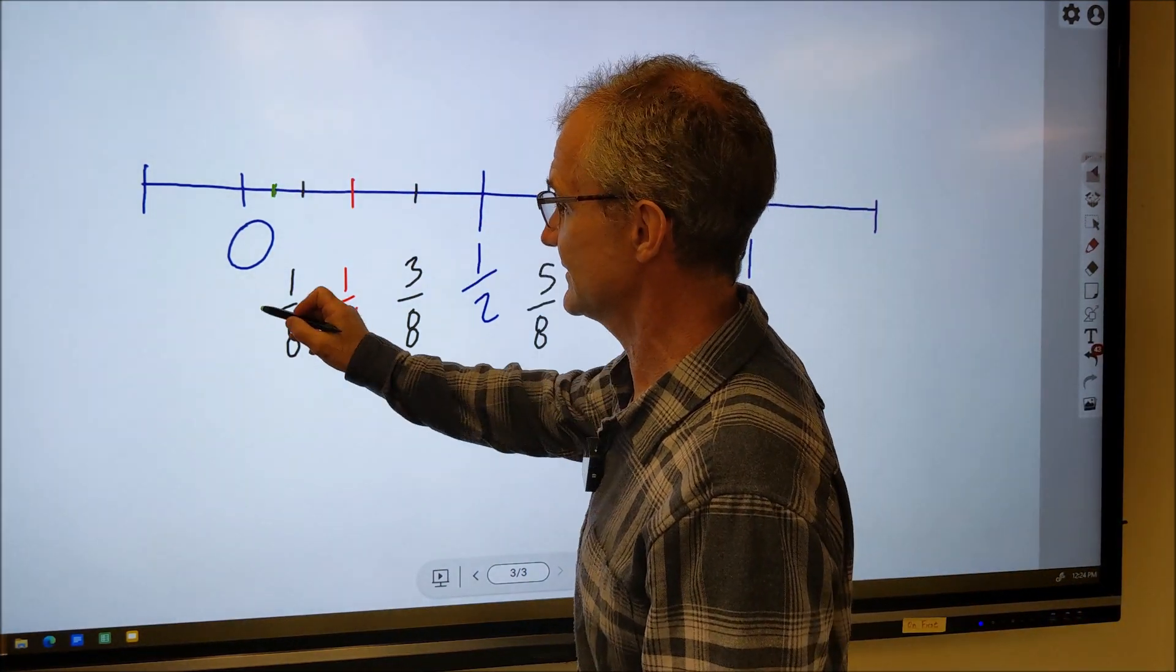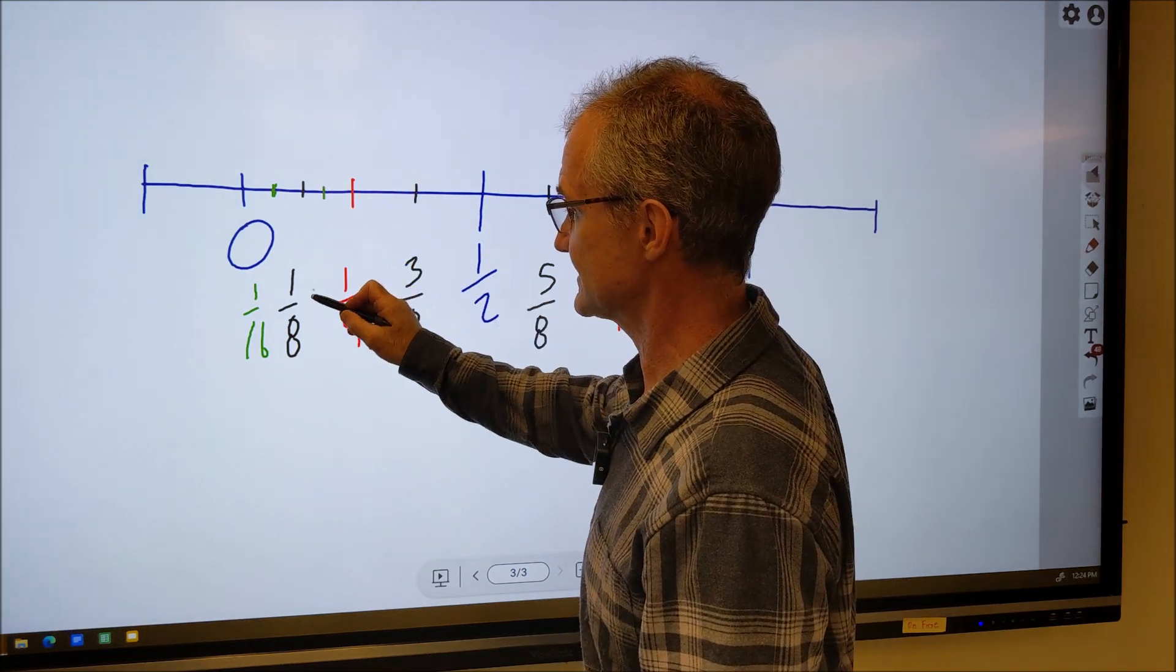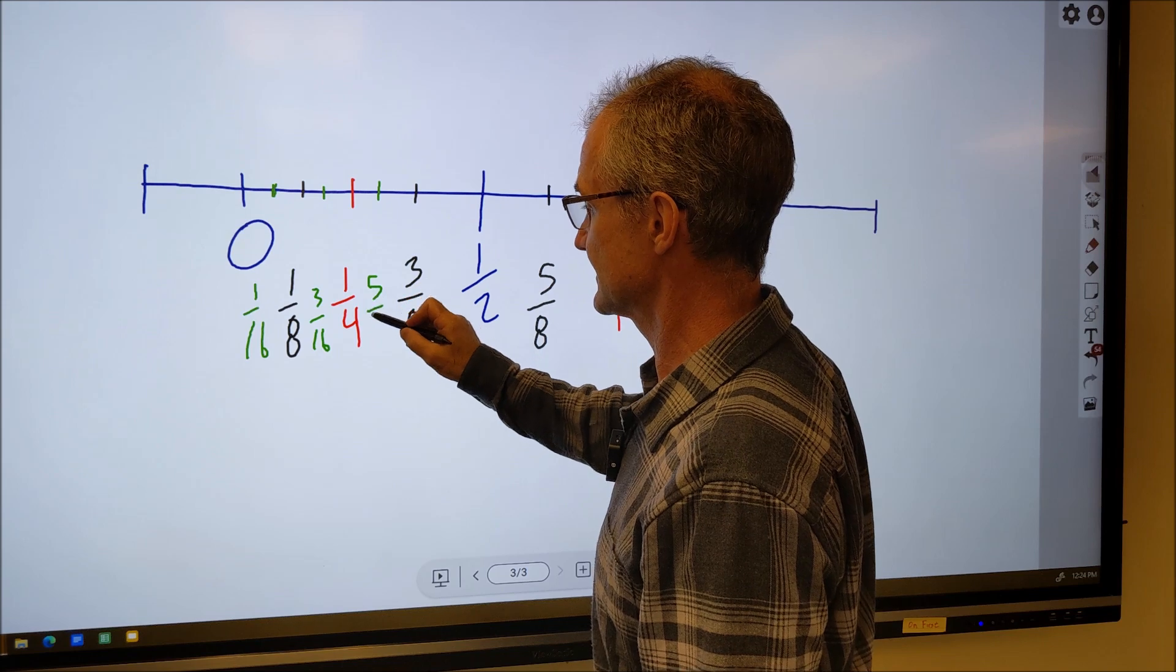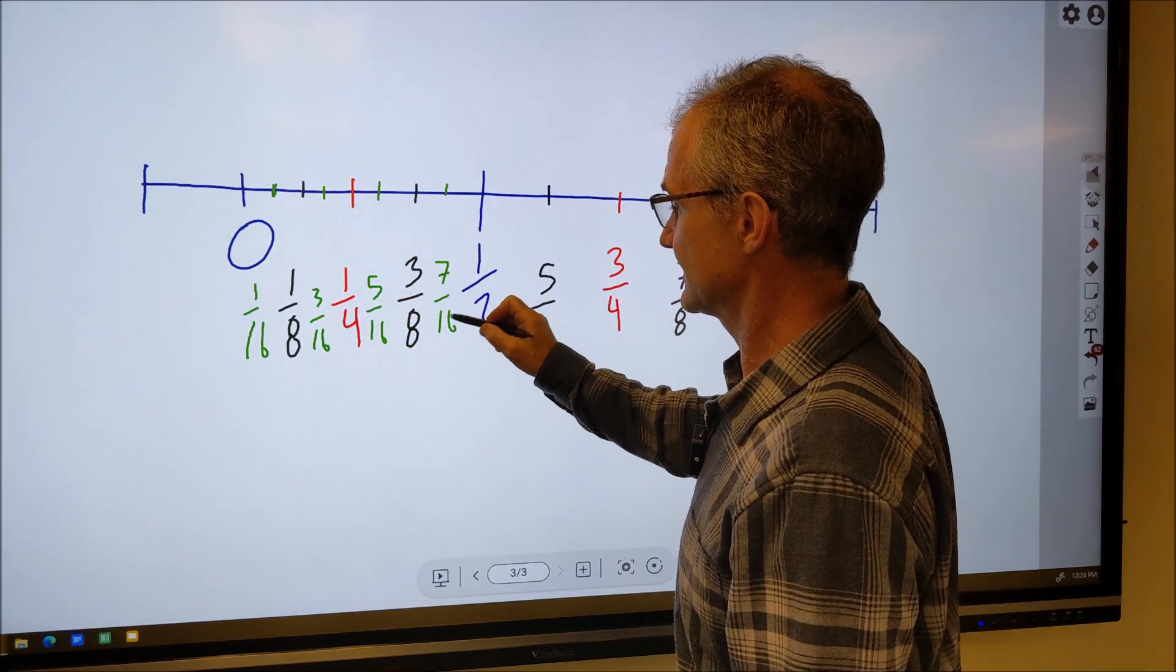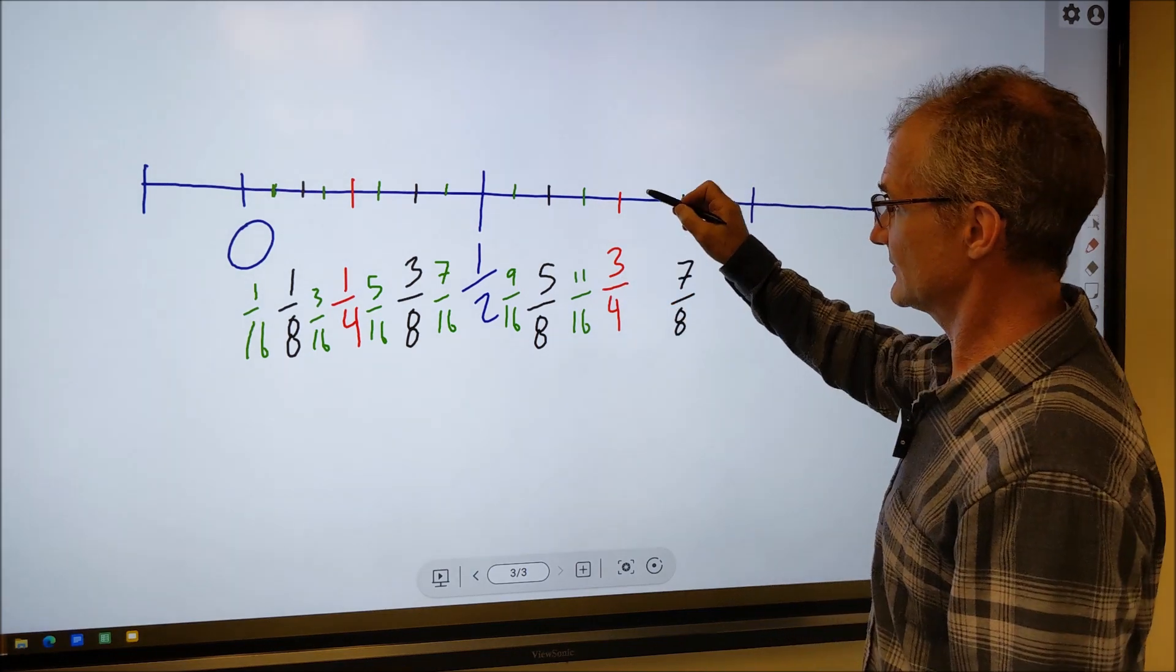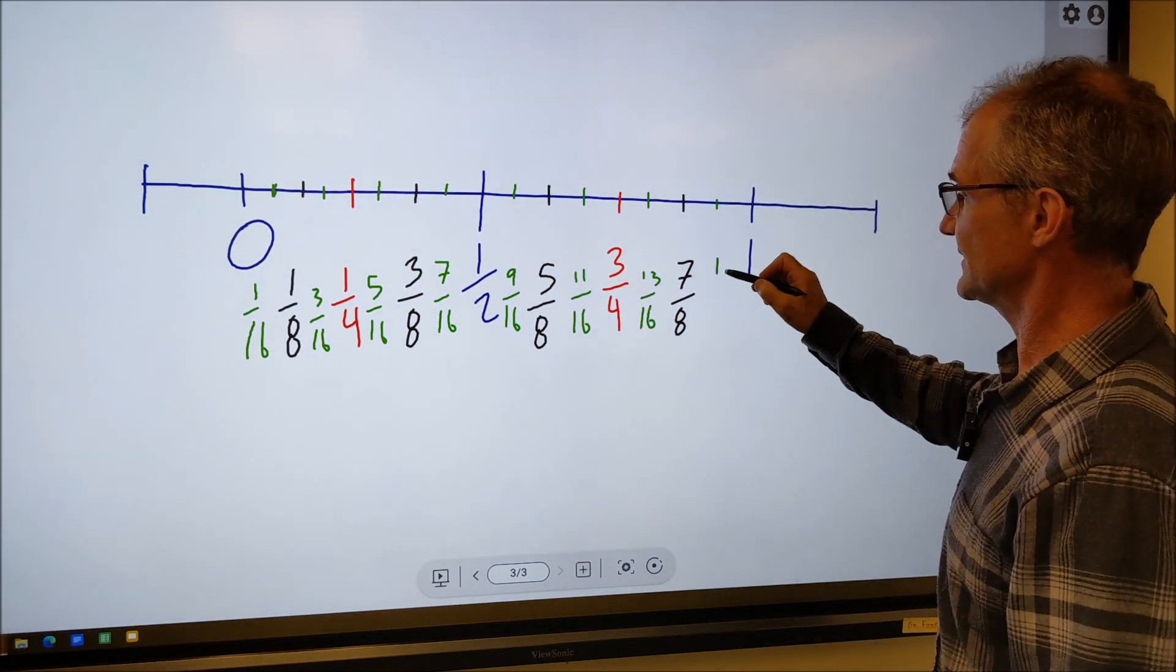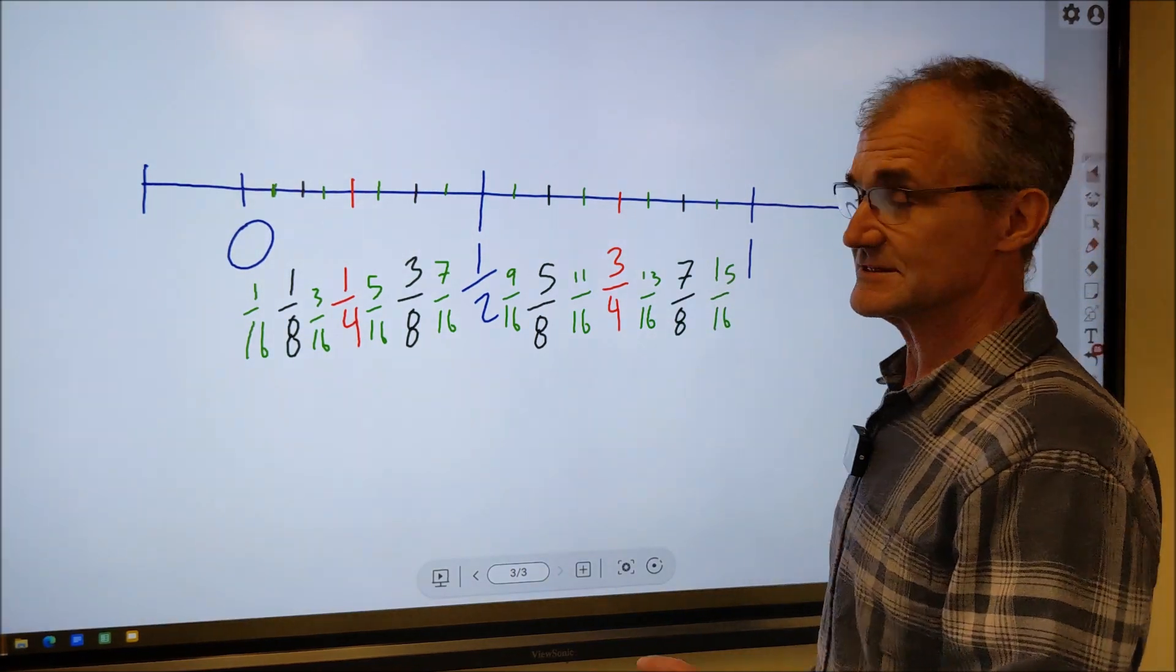So the shortest line on a tape measure right here will be one sixteenth, two sixteenths, three sixteenths, four sixteenths, five sixteenths, six sixteenths, seven sixteenths, eight, nine, ten, eleven, twelve, thirteen, fourteen, fifteen, and back to sixteen sixteenths.